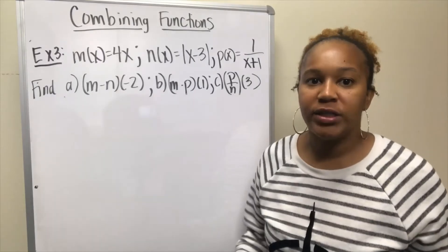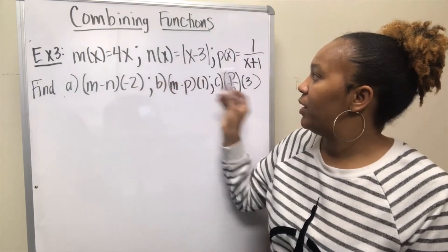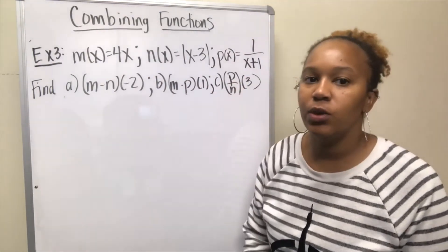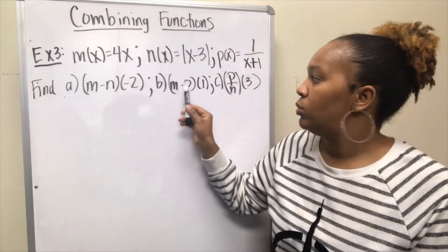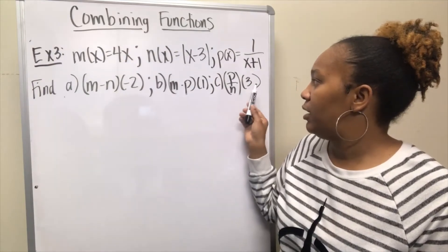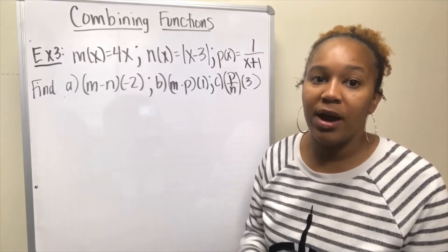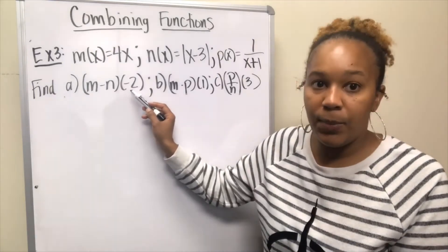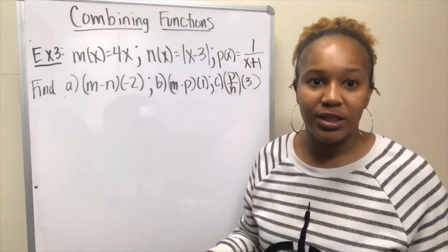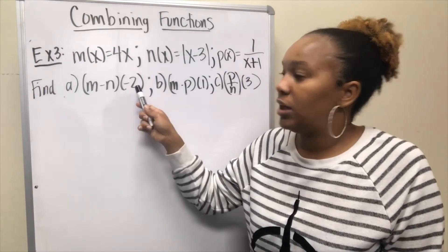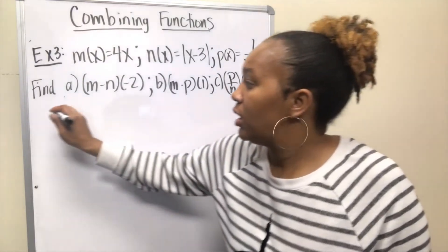For example three, we have three functions: m(x) = 4x, n(x) = |x - 3|, and p(x) = 1/(x+1). We want to find: (a) (m-n)(-2), (b) (m·p)(1), and (c) (p/n)(3). What's different here is that we're combining functions at a specific number, so our final result should be a number.